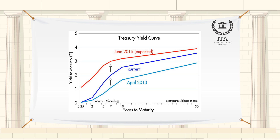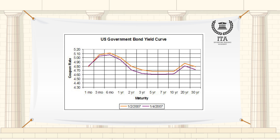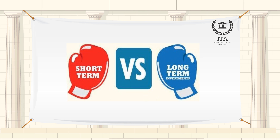This usually happens with Treasury note yields — that's when yields on one-month, six-month, and one-year Treasury bills are higher than yields on 10-year or 30-year Treasury bonds.